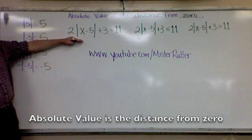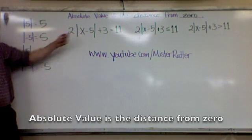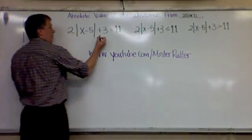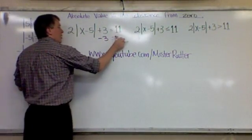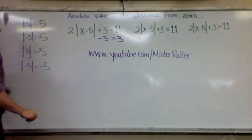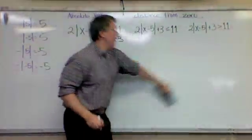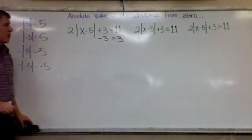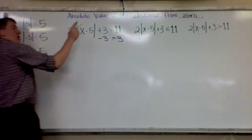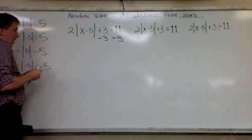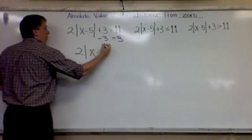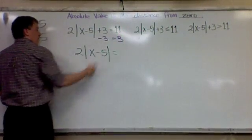So step-by-step, I need to get the absolute value by itself. So what needs to get out of there? Three. So we're going to subtract three from both sides, and you're going to get 2|x-5|. That's gone. Equals 8.